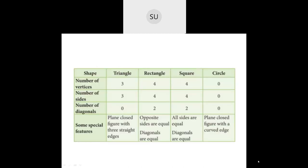Then we studied different types of shapes — plain figures or 2D shapes, which have length and width. We saw what is a triangle: it has three vertices, three sides, and zero diagonals. A triangle does not have any diagonal. Some special features: it is a plain closed figure with three straight sides.